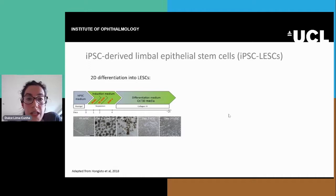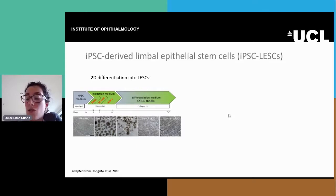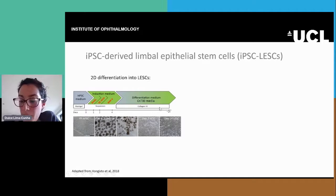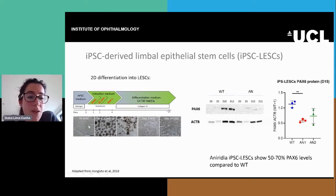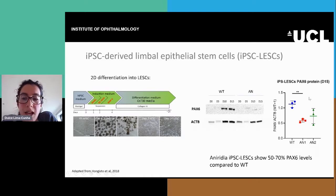Another model we generated using the same iPSC lines were iPSC-derived limbal epithelial stem cells — cells that are part of the cornea. To do so, we adapted a published protocol of about 25 days. When we looked at PAX6 levels throughout this process, we see already at day 10 that there is less PAX6 in the aniridia than in the wild type, and at day 15 this is significantly reduced in one of the lines.